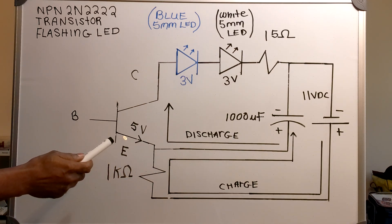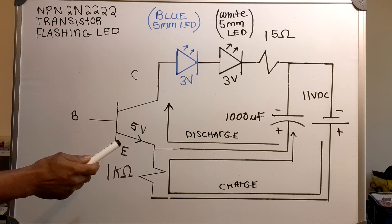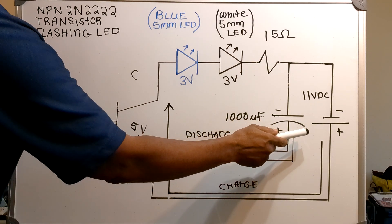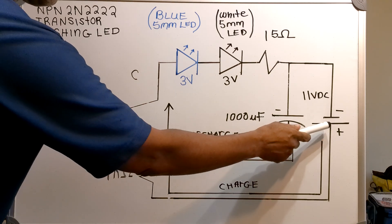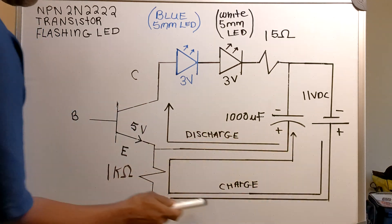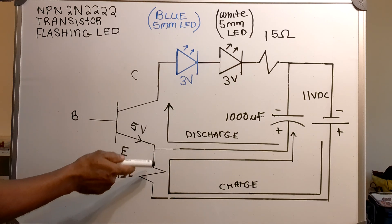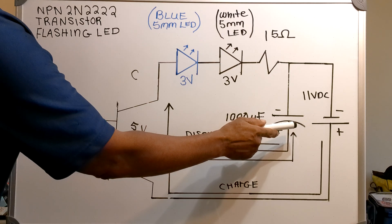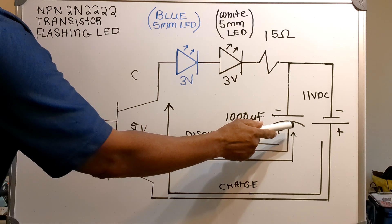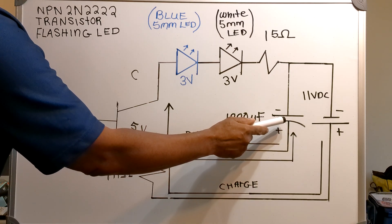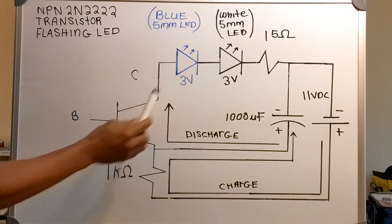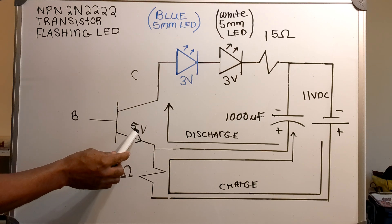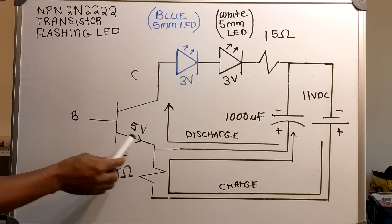Now how does this flashing LED circuit work? The capacitor is charged up through the volt source and through the 1k ohm resistor. As the capacitor charges, it puts 5 volts across the base-emitter junction.